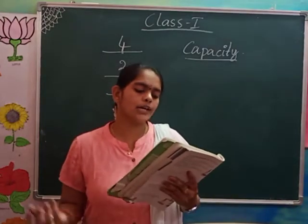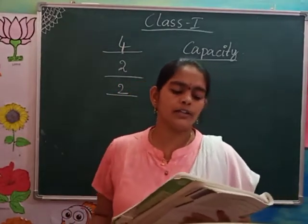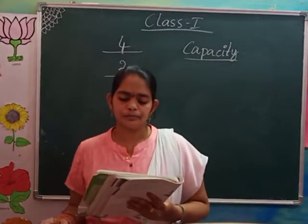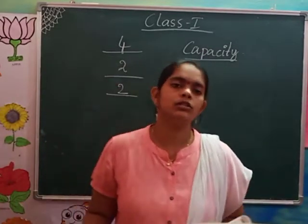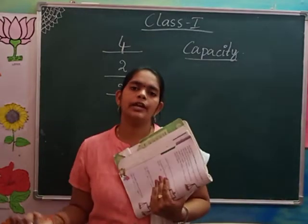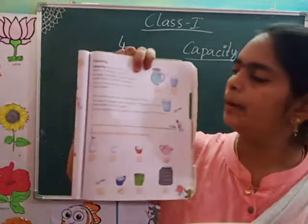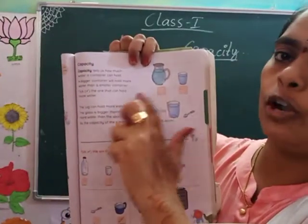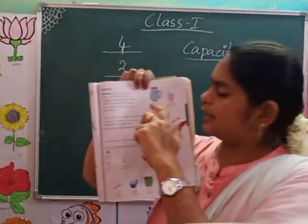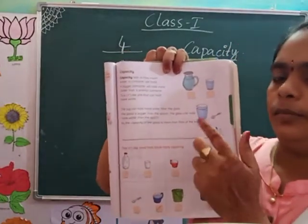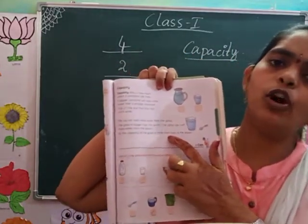The jug can hold more water than the glass. The glass is bigger than the spoon, so the glass can hold more water than the spoon. In page number 43, which container can hold more water — glass or jug? The jug can hold more water than the glass, so you have to tick on the jug. And which one holds more — spoon or glass? Glass can hold more water.